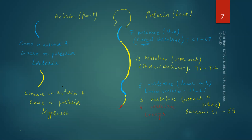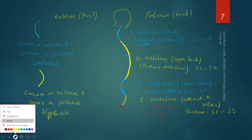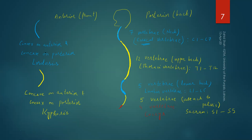The lordotic curves formed by the cervical and lumbar vertebrae have more movement — they are more mobile. Mobility as a whole is higher in the vertebrae of the neck and lower back. Mobility is relatively less in the kyphotic curves.